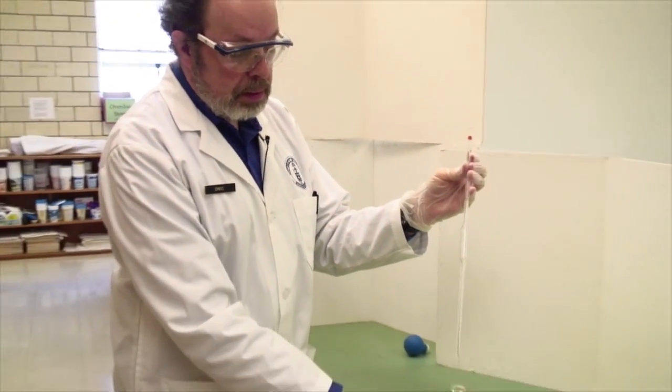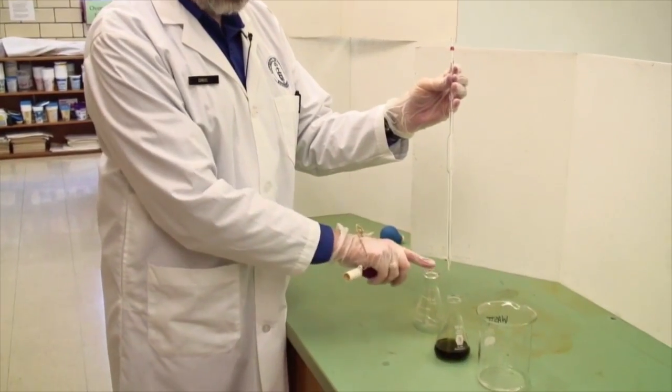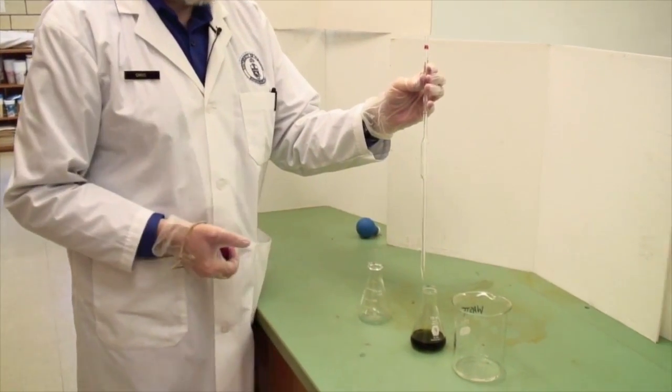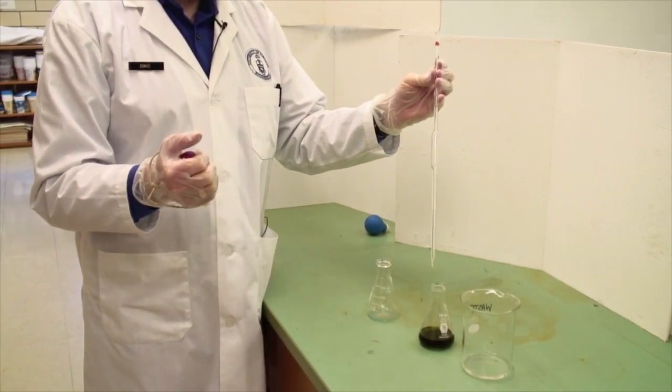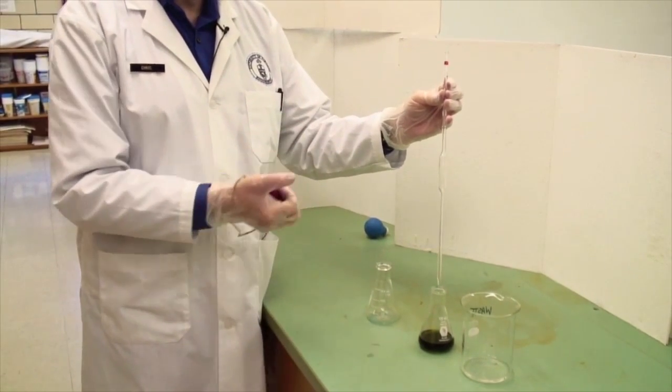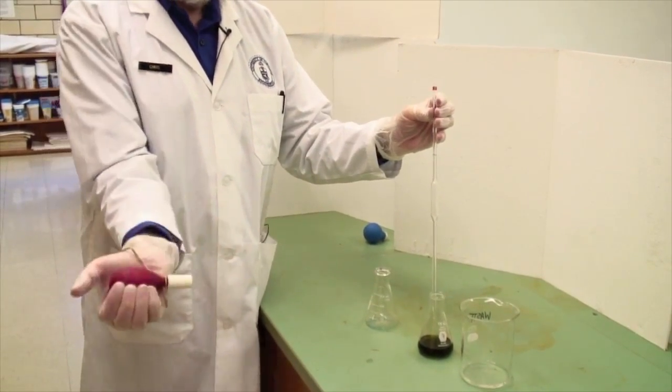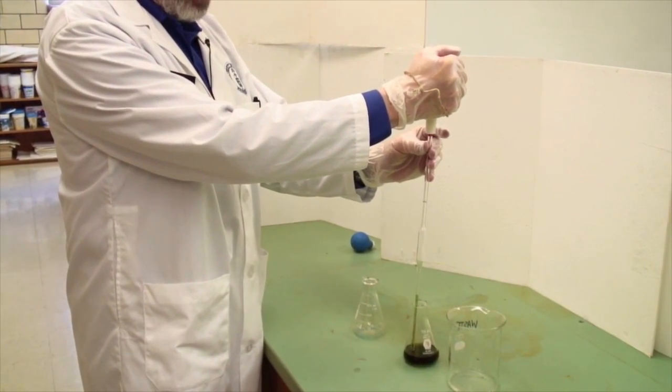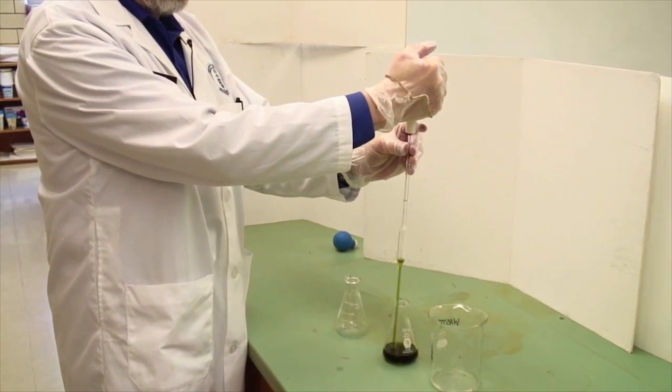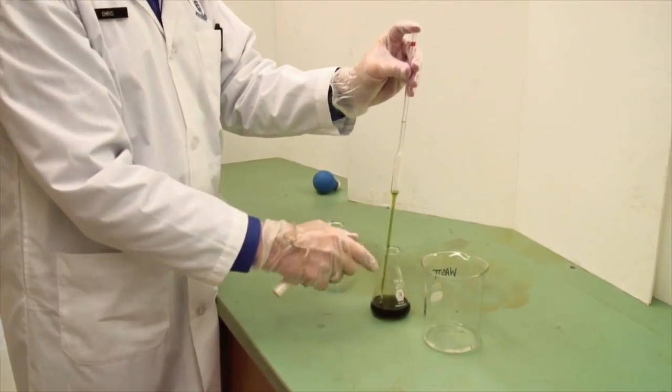I'm going to be dispensing this green liquid into this empty container, 10 milliliters of it. The first thing to do is wash the pipette with whatever this liquid is, because who knows what's in there right now. Flatten the pipette bulb and apply suction to get some liquid inside.